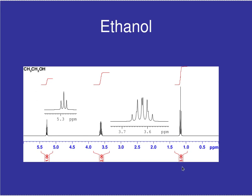Similarly, the methyl group — which integrates to three — appears as a triplet because it has two CH₂ neighbors; n+1 says it splits into three. However, when we look at the CH₂ in the middle, there is a highly complicated splitting pattern. Looking at the central CH₂: from its first neighbor it is split into four — a quartet — because CH₂ has three neighbors on the left from the CH₃, and n+1 gives four.